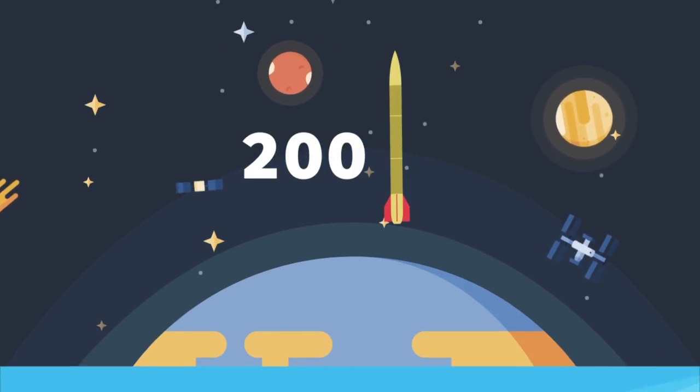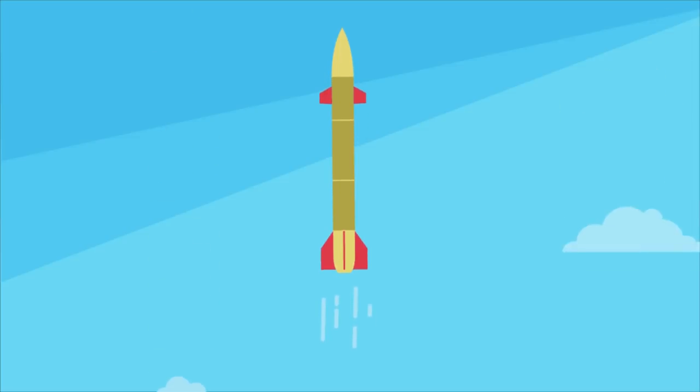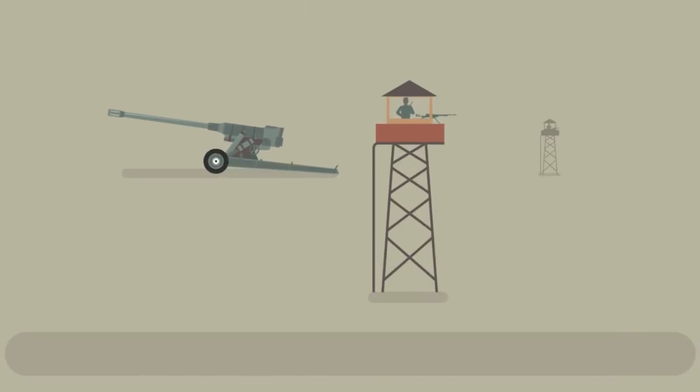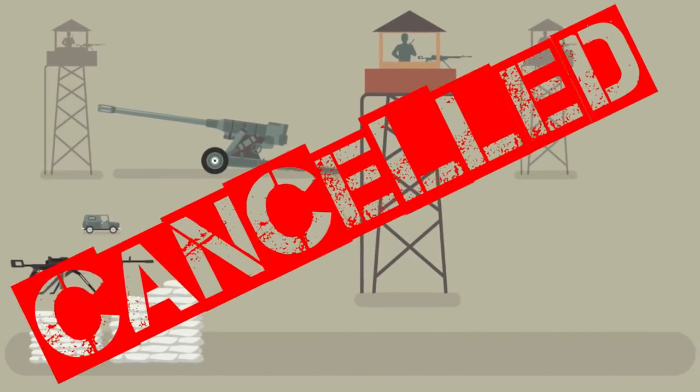The speed of the projectile was less than half of that necessary to reach low Earth orbit, so Bull wanted to continue. He designed a more complex Martlet 3 and Martlet 4, which were miniature rockets with their own thrusters. But unfortunately, with the cancellation of sponsorships from both Canadian and US governments, the project HARP was over.